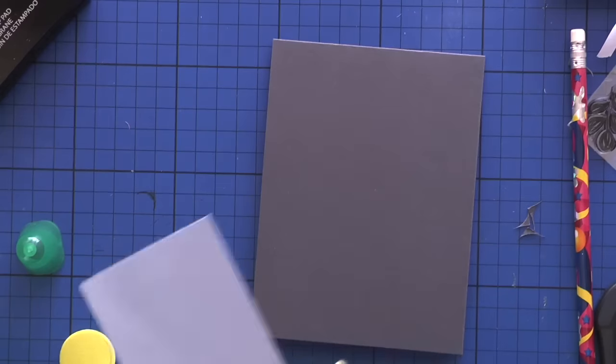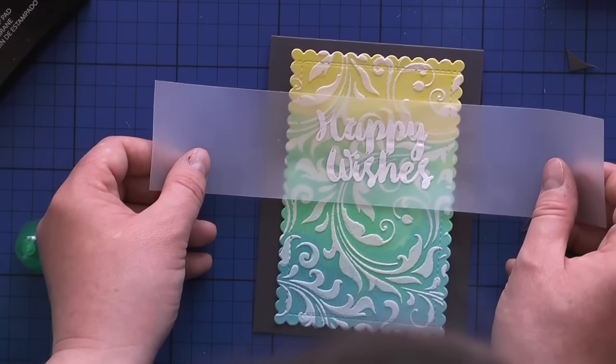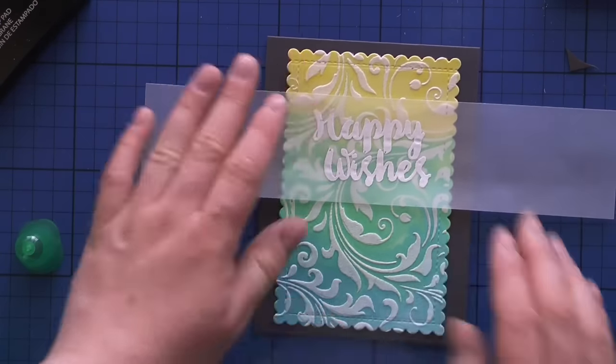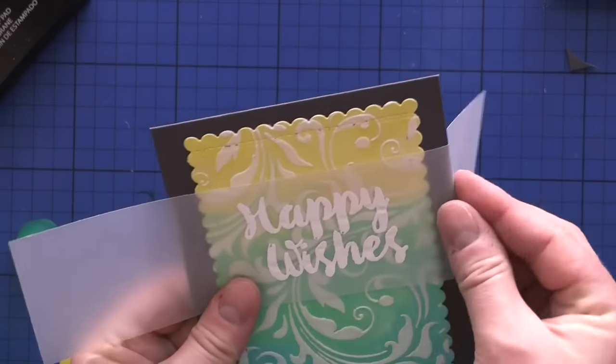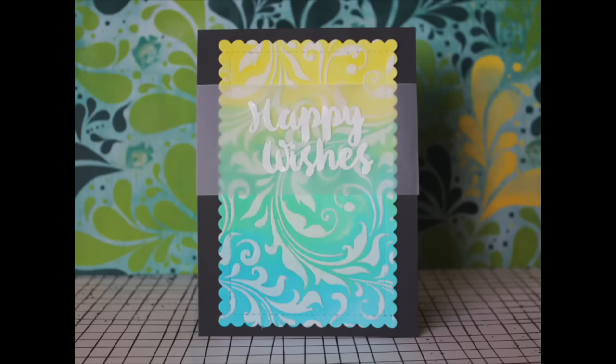I use an acrylic block to adhere it properly. Now I'll add some double-sided tape to adhere my front panel, bend the vellum behind my card front onto the card base. I use this beautiful dark gray card base to cover the vellum inside. I added another piece of cardstock, and that's how the finished card looks.